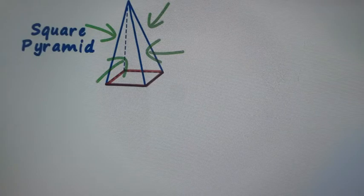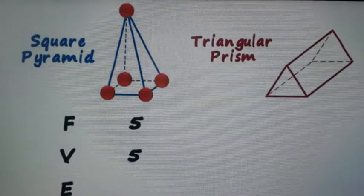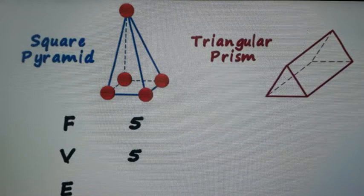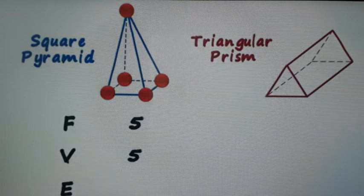which is in red color. So total number of faces are five here. Now number of vertices: there are five vertices you can see in form of balls, four balls are at the bottom and one is at the top.